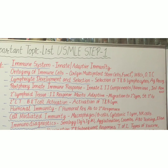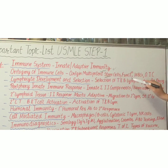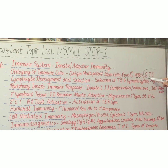In immunology, the first important topic is the immune system. Subtopics include innate and adaptive immunity. The next topic is ontogeny of immune cells, with subtopics covering the origin of multipotent stem cells, their function, white blood cells, and ontogeny of immune cells.